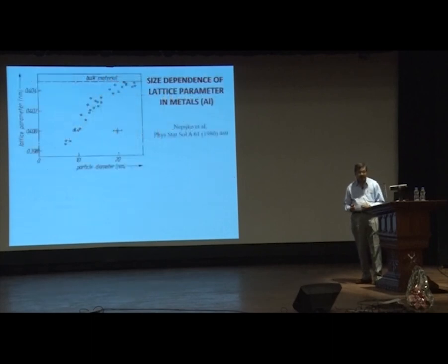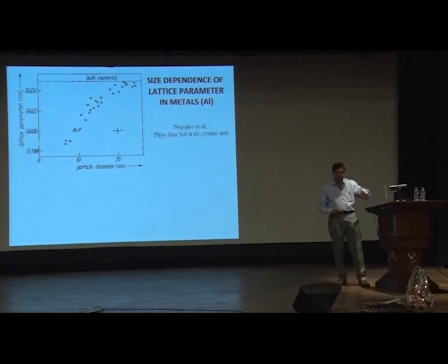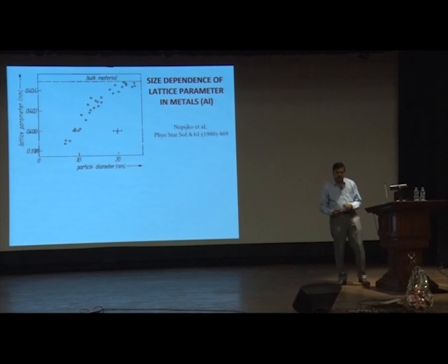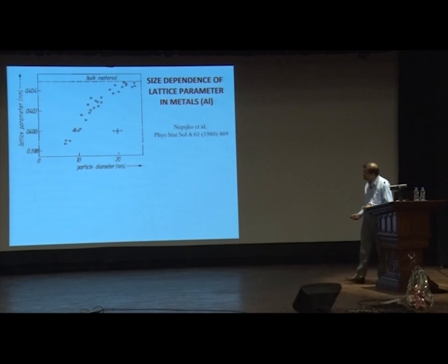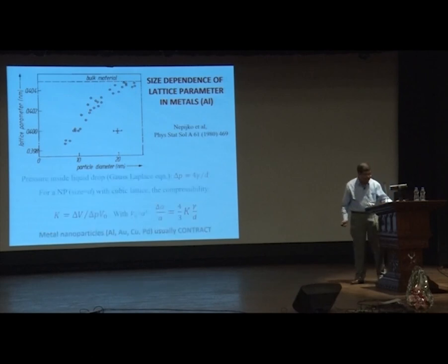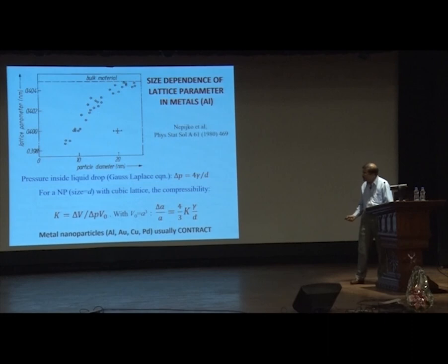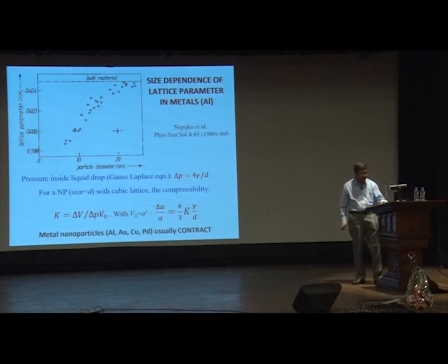We had an early model to show why there is a lattice expansion as you go down in particle size in oxides. The atoms on the surface have dangling bonds, which act like surface dipoles that repel each other and give you a net isotropic expansion of the lattice.